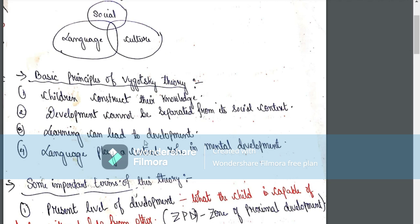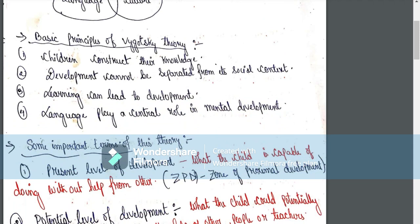Learning is the development and gathering of information. Learning can be modified and can play a central role in mental development. In sociocultural development, language plays a central role in mental development.